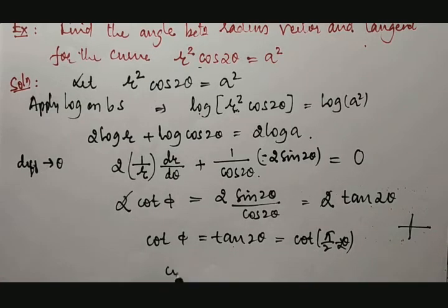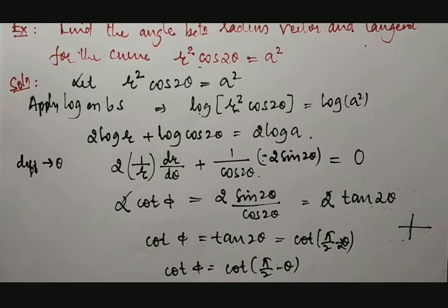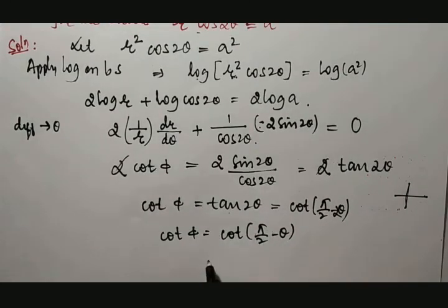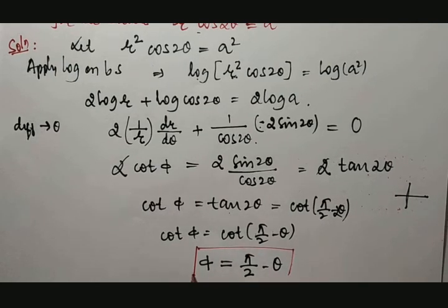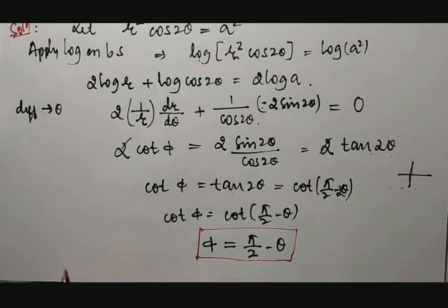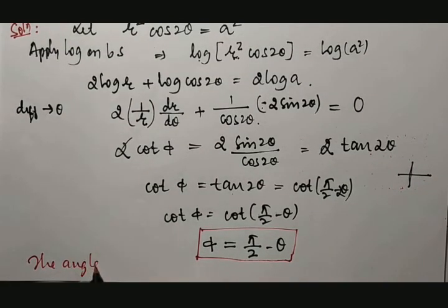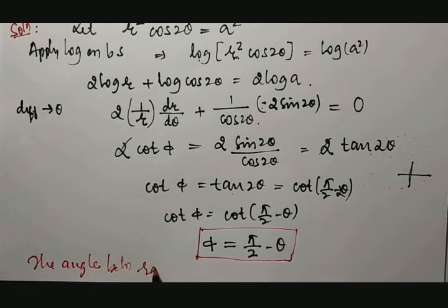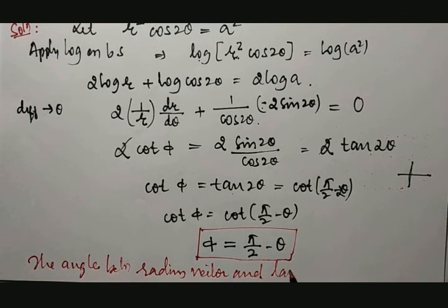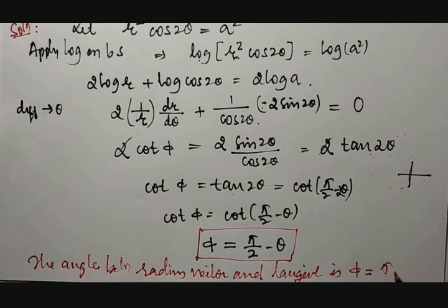Therefore, from both sides cot cancels. What is the value of φ? That is 90° - 2θ. Therefore, the angle between radius vector and tangent is φ = π/2 - θ.